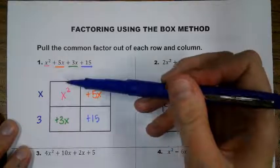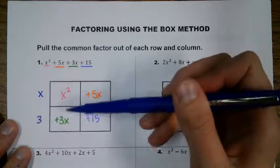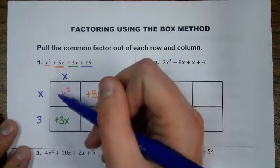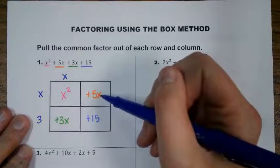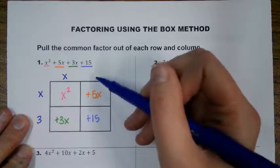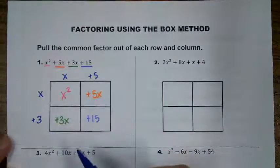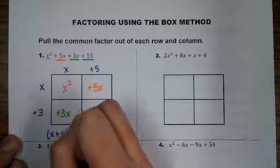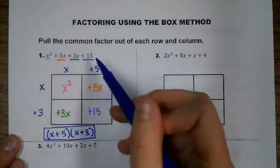Now we go up and pull out the common factor from the columns. The highest common factor we can pull out is an x — there's no integer factor, but they both have an x. Then we look at 5x and 15: the greatest common factor between both of these is 5. So our two factors from the box are x plus 5 and x plus 3, and this is the factored form.